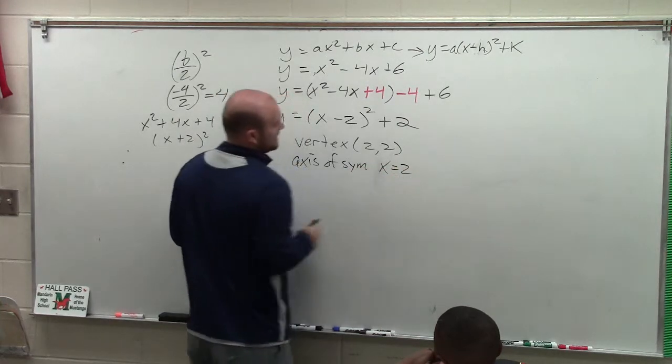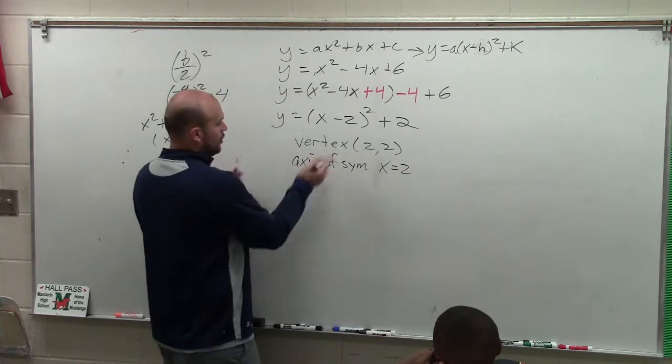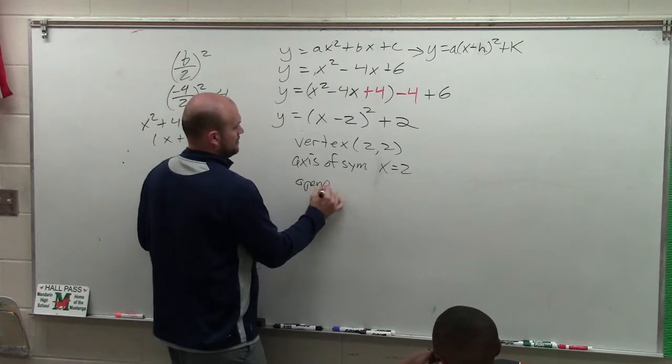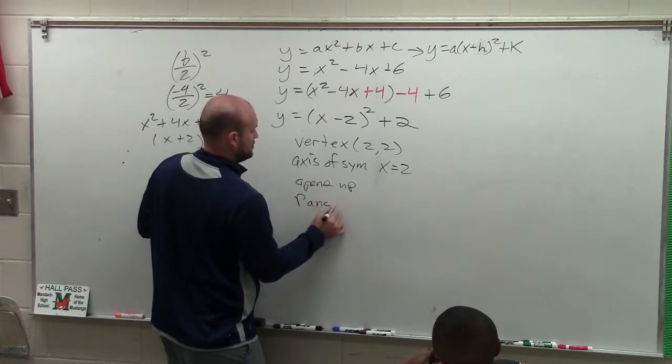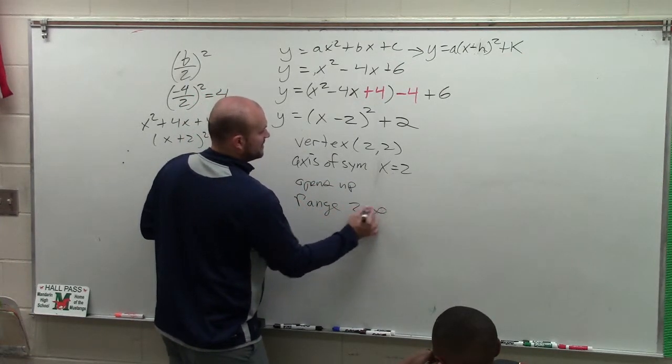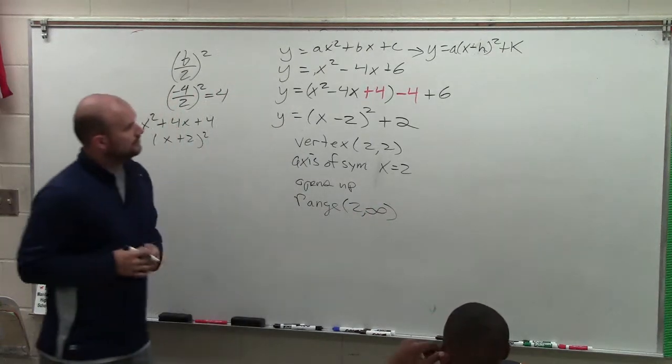Axis of symmetry is x equals 2. The graph opens up. You can say the range is from 2 to infinity. And you can do a whole bunch of things from there.